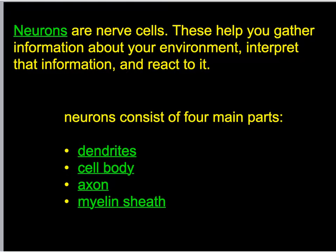Looking at the nervous system, like all the different systems of the body, we're looking at specific cells that help them do their thing. The specialized cells of the nervous system are called neurons. Neurons have these parts that you're going to need to know: dendrite, cell body, axon, and myelin sheath.